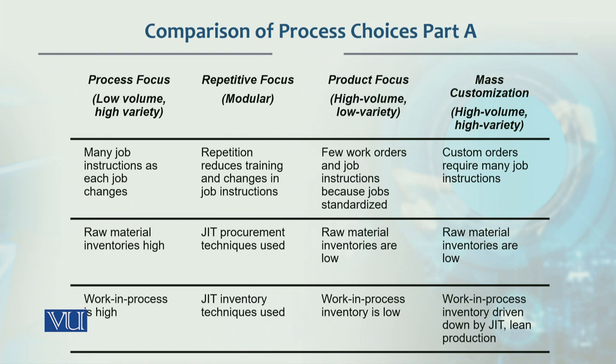If we look at inventory: in process focus, raw material inventories are high, work in process is also very high, but end product inventory will not increase because production starts on customer order and is delivered directly. In repetitive focus, just-in-time procurement is applied, so inventory is low in raw material as well as work in process, but end product is relatively higher because it is developed on a forecast basis.